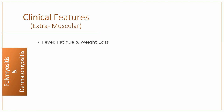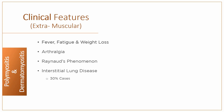Extramuscular features include fever, fatigue and weight loss, which are the most common symptoms in both conditions. Other symptoms may include arthralgia and Raynaud's phenomenon. Interstitial lung disease occurs in up to 30% of patients and is strongly associated with the presence of antisynthetase, also known as anti-JO1, antibodies.